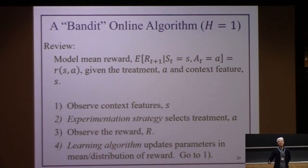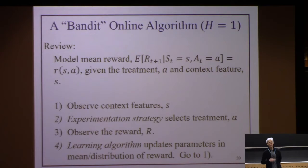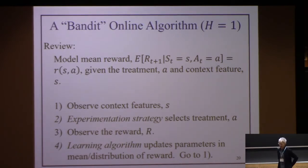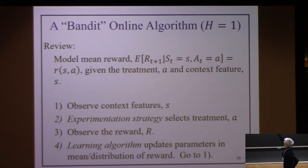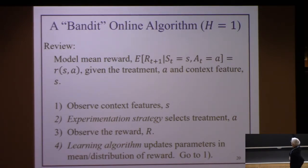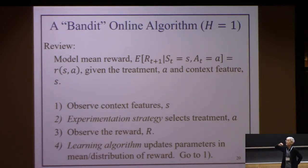I'm going to start with a bandit algorithm — meaning horizon H equals one — and then modify it. In a bandit algorithm, at each time point I observe context, the experimentation strategy selects a treatment (send message versus not), I observe the reward (30-minute step count), and the algorithm updates the parameters in the mean reward model given context and action.